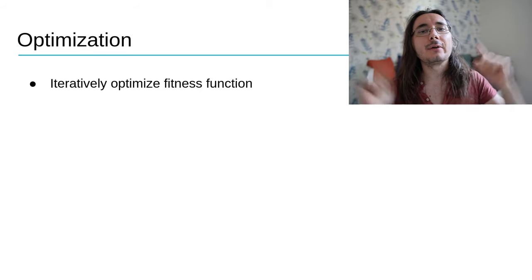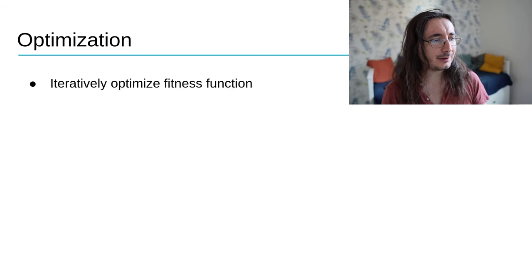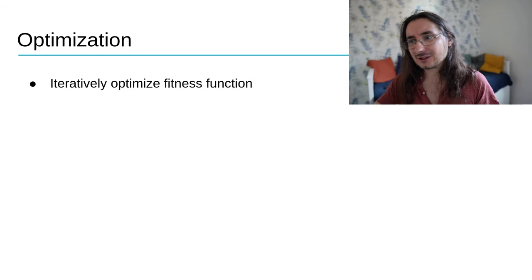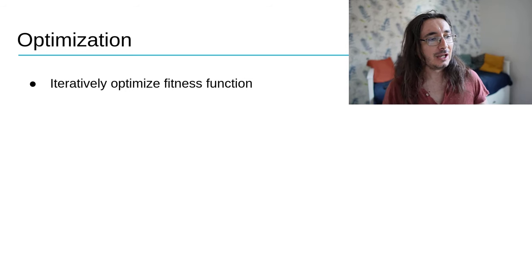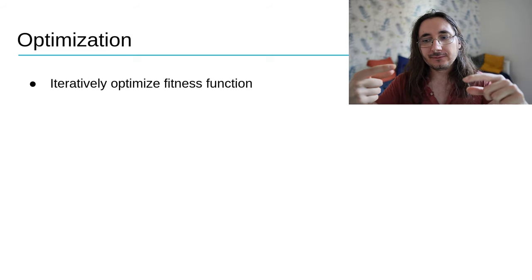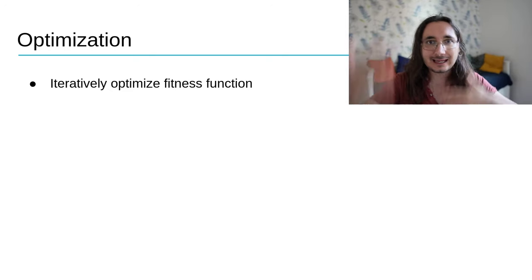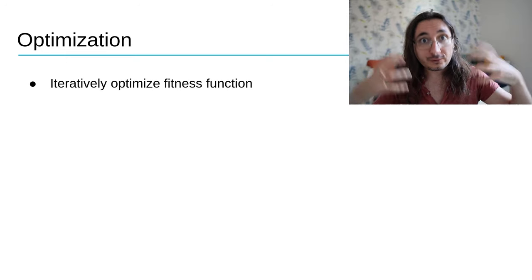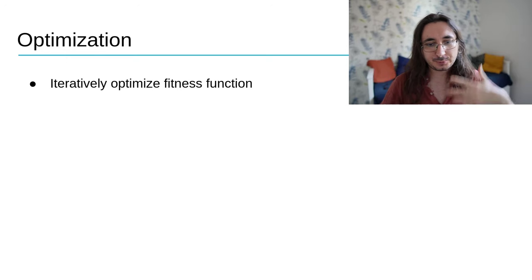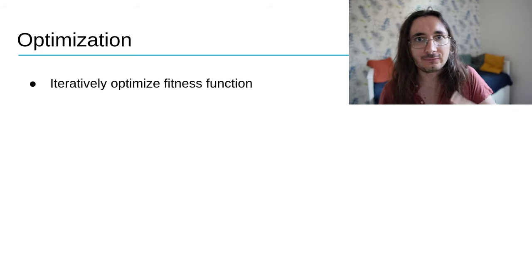Let's move on to another category: optimization techniques. The basic idea is that you have a fitness function — a quality function that tells you how good the melody your system has generated is. You use it to score a solution, then iteratively create a variation of that solution and re-score it again and again until the fitness function tells you this is a good melody. It's an iterative process where you optimize using a scoring function, especially in evolutionary and genetic algorithms.